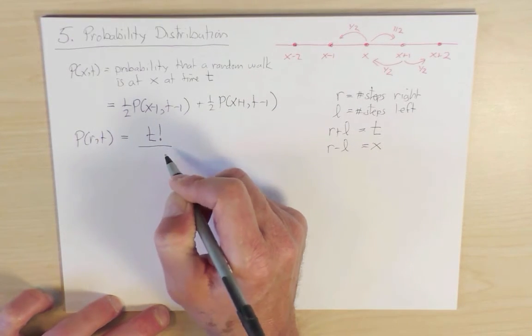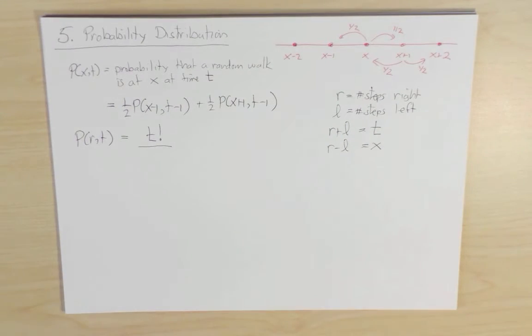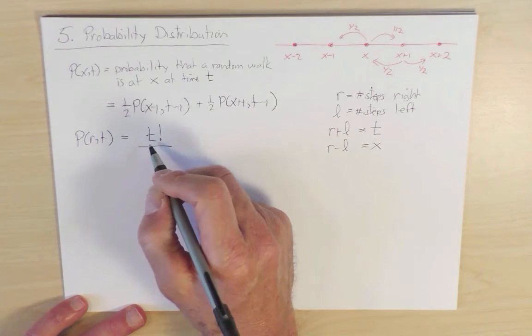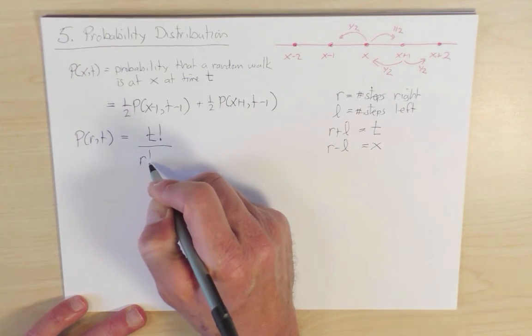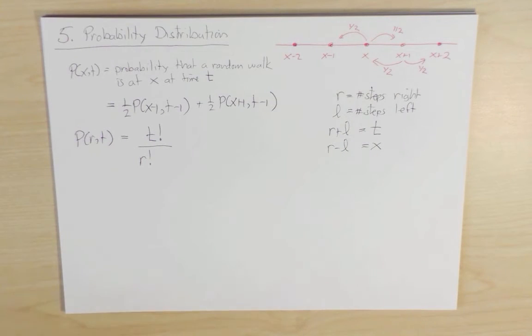However, if I want to constrain my walk to take r steps to the right, that means that of these t factorial arrangements of the steps, r of them have to be to the right, and l of them have to be to the left. So the number of distinct ways of doing this, we have to divide t factorial by r factorial, because all right steps, we can take them in any order, and it'll end up at the same place. And similarly for the number of left steps.